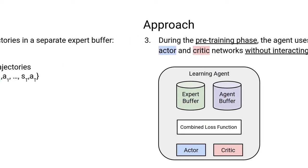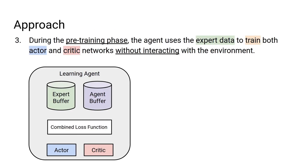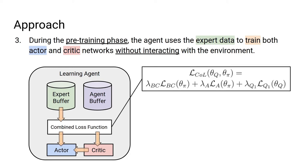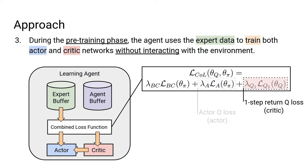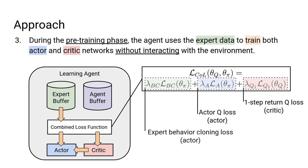During the pre-training phase, the agent uses the expert data to train both actor and critic networks without interacting with the environment. The combined loss function computes the one-step return Q-loss, the actor Q-loss, and the behavior cloning loss for the expert samples.